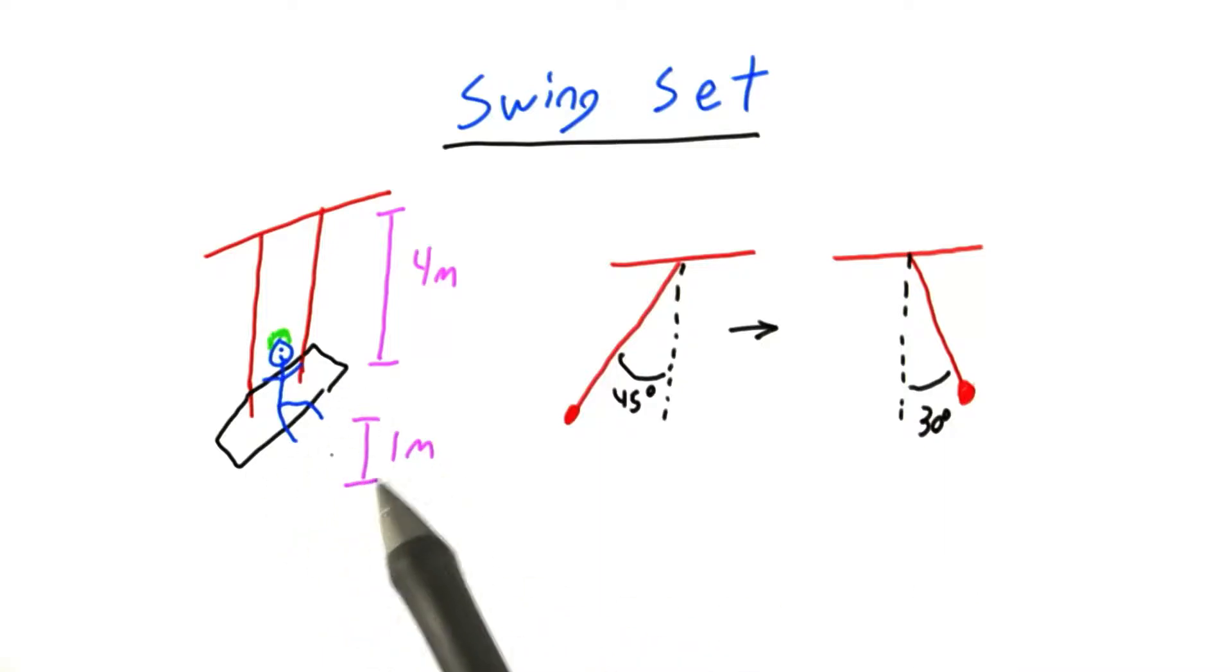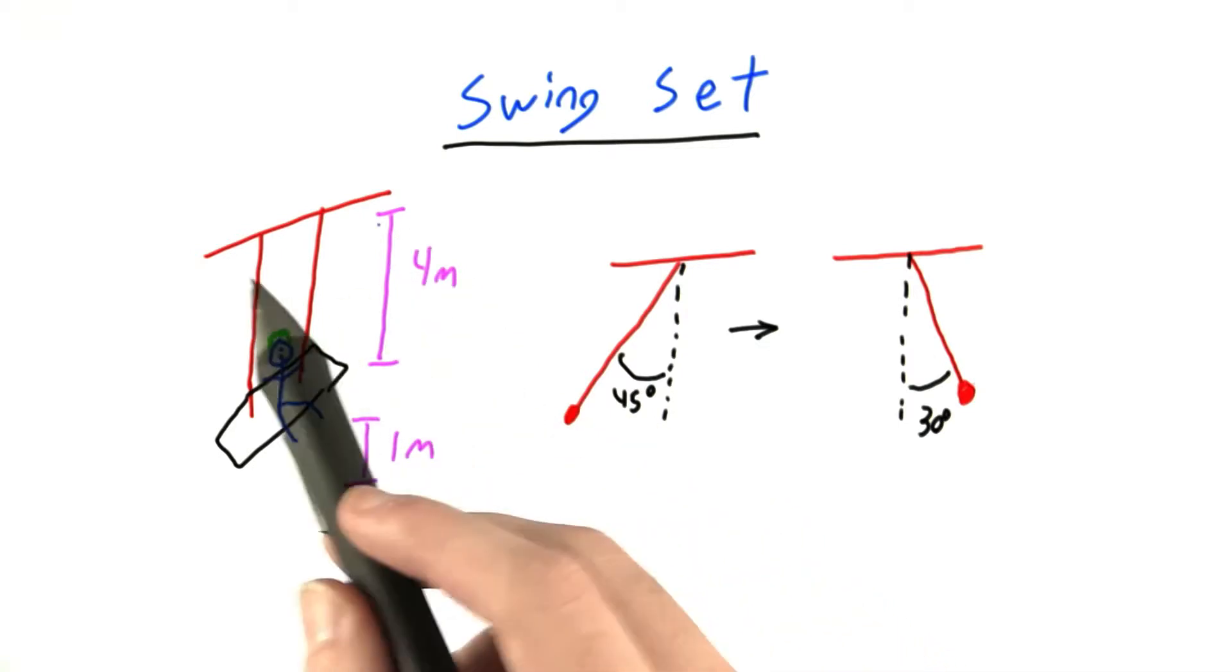For this problem, imagine that you're sitting on a swing set here that's one meter off the ground and the swing itself is suspended four meters below the top of the swing set here.